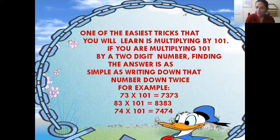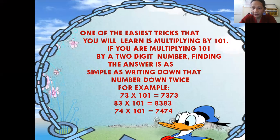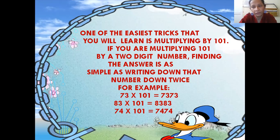What you have to do here is simply write down that number twice. For example, 73 — this is a two-digit number. Next example, 83 — this is a two-digit number. Next example, 74 — again a two-digit number. Next example, 99 — these are all two-digit numbers. Remember, if you are multiplying any two-digit number by 101, you simply write down the number twice.